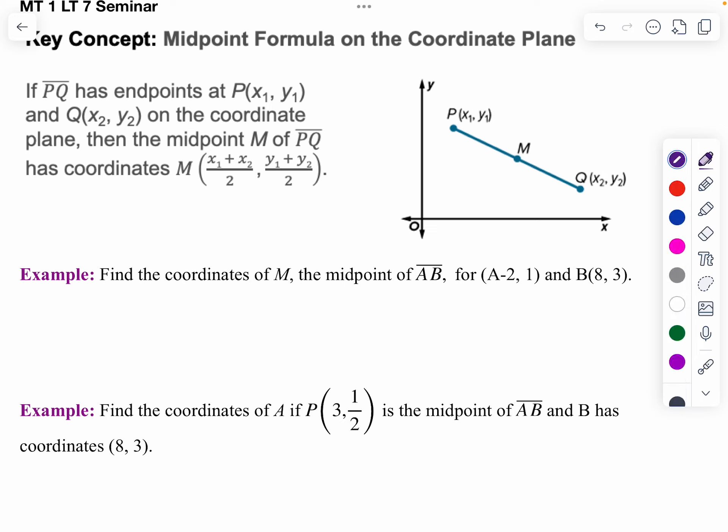So for example, in this example I've got these two points. So to find the midpoint, I find the average of my x's. So negative 2 plus 8 over 2 and 1 plus 3 over 2. Negative 2 plus 8 is 6 over 2. 1 plus 3 is 4 over 2 and that simplifies to 3, 2.